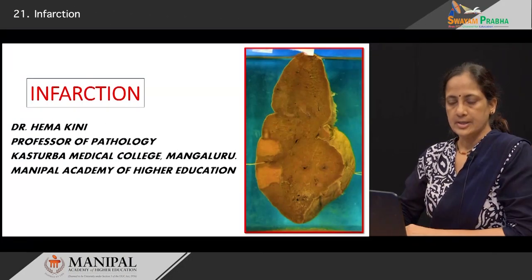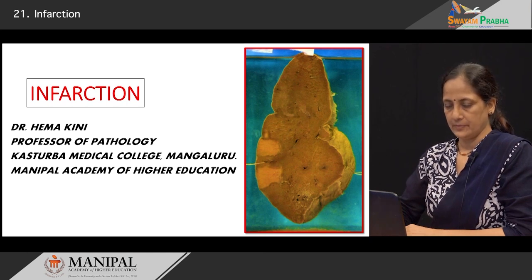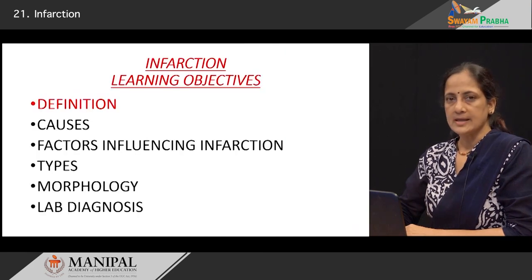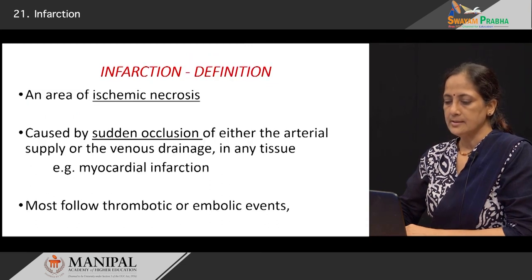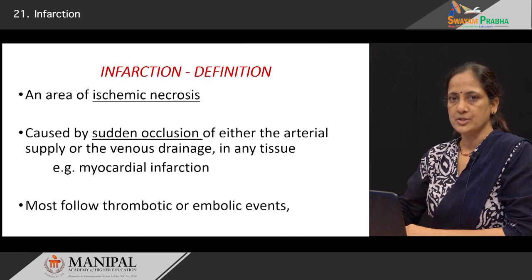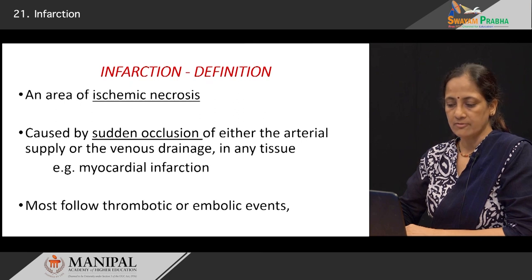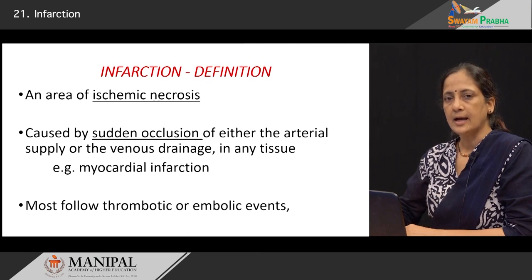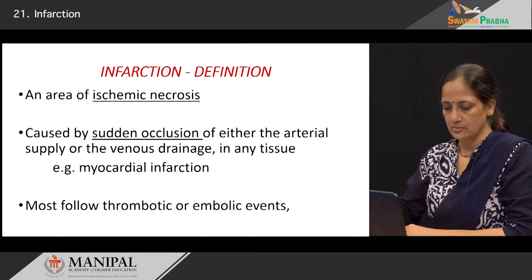The topic we are going to discuss today is infarction. What is infarction? It is an area of ischemic necrosis caused by sudden occlusion of either the arterial supply or the venous drainage in any tissue. A good example for this is myocardial infarction. What do we mean by ischemia? Ischemia means a relative decrease in the blood supply to a tissue resulting in hypoxia. The necrosis that results from that is called ischemic necrosis.